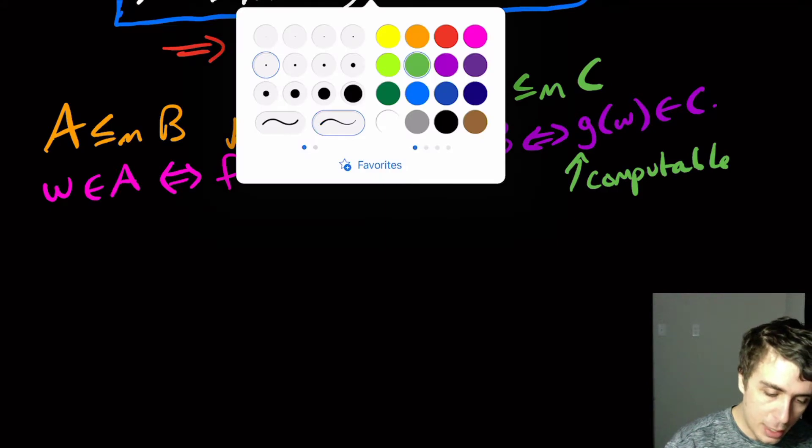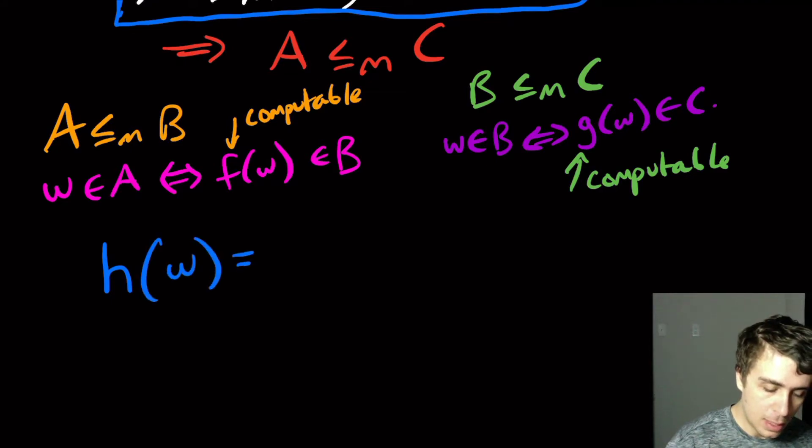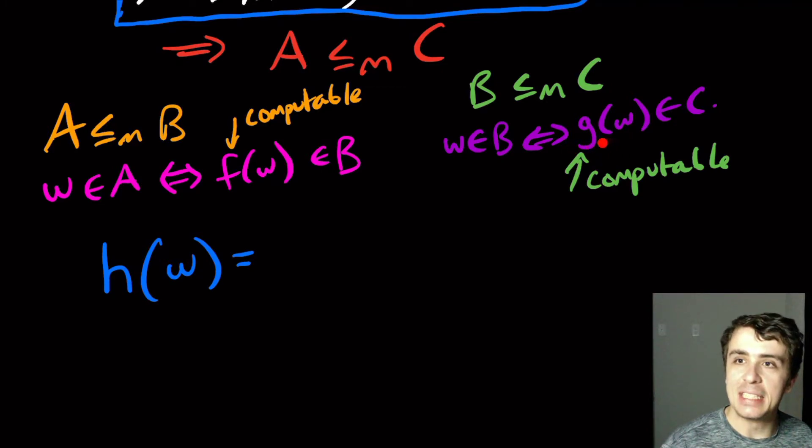So what I'm going to do here is I'm going to design a function H of W. And I'm going to have that B, well, the one that I want to be applied last is the G function, because that goes from B to C,